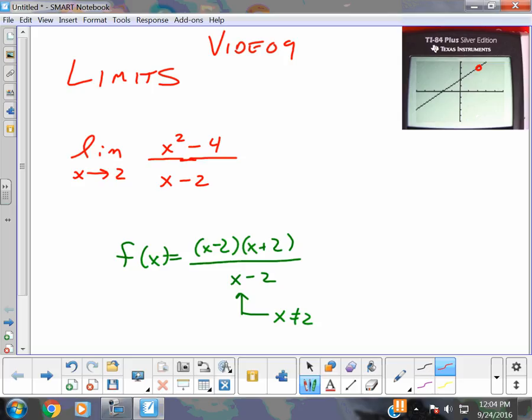Now, the whole point of a limit is asking, as the left hand comes in and the right hand comes in from the positive side, do they come to the same point? And in this case, they certainly do, and you can tell from this graph up here, I think, that they come in at the point 2, 4. But you must realize that f of 2 does not equal 4, because the function is not defined there.